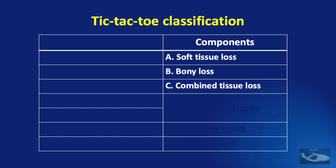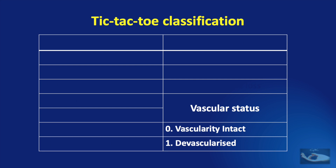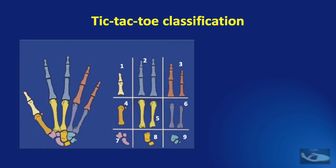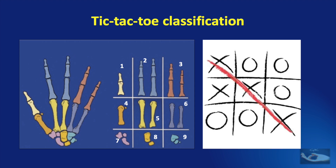According to the component involved, it could be soft tissue loss, bony loss, or combined tissue loss. As for vascular status, it could be intact or devascularized. To specify the part of the hand involved, the hand is divided into nine segments, which reminds us of the game tic-tac-toe.